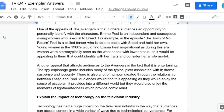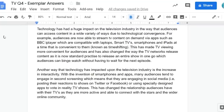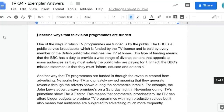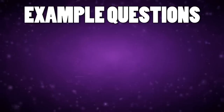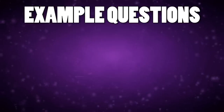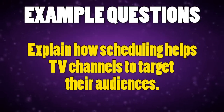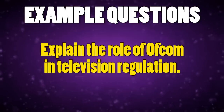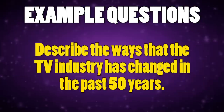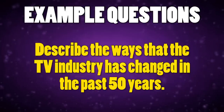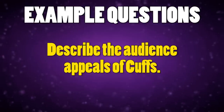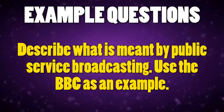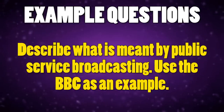Those are three exemplar questions and hopefully they have helped you understand how to approach question four. Here is a list of some more practice questions to try on your own: 'Explain how scheduling helps TV channels to target their audiences.' 'Explain the role of Ofcom in television regulation.' 'Describe the ways that the television industry has changed in the past 50 years.' 'Describe the audience appeals of Cuffs.' 'Describe what is meant by public service broadcasting — use the BBC as an example in your answer.'